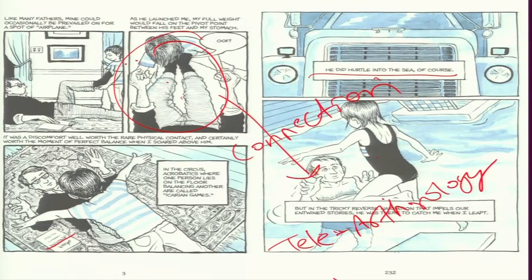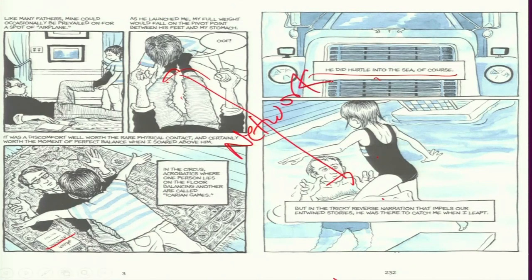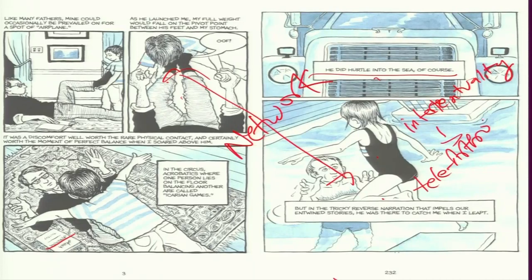First page to last page — something we see through the network. It also indicates that intertextuality is a kind of teleorthology. I am sure you now understand what I wanted to explain to you with these examples.